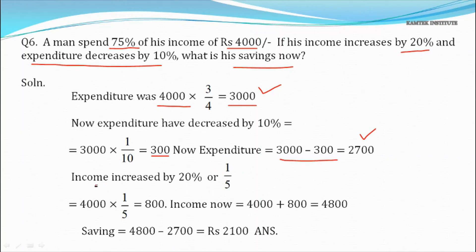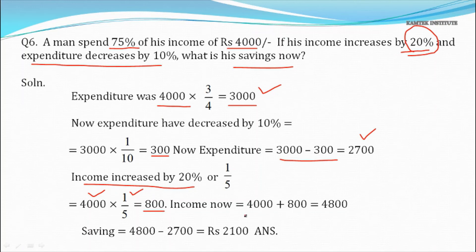Income increased by 20%: 4,000 × 1/5 = 800. New income = 4,000 + 800 = ₹4,800. New savings = new income − new expenses = 4,800 − 2,700 = ₹2,100 is the answer.